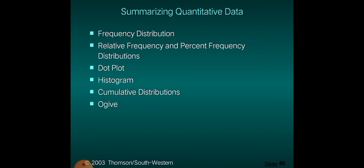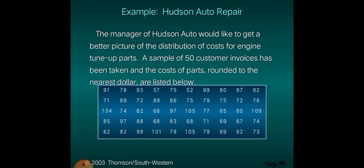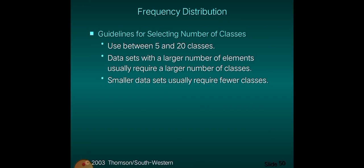Now let's proceed to summarizing quantitative data. This covers frequency distribution, relative frequency and percent frequency distribution, dot plot, histogram, cumulative distributions, and the ogive. We're returning to the Hudson Auto Repair example. There are guidelines for frequency distributions: use between 5 and 20 classes. Data sets with a larger number of elements usually require a larger number of classes, while smaller data sets usually require fewer classes.